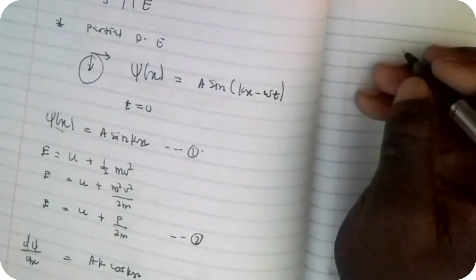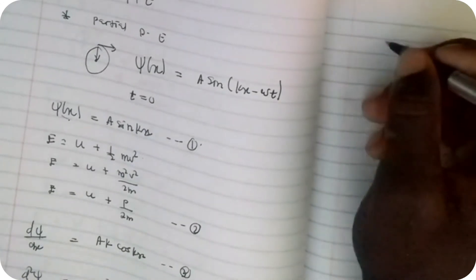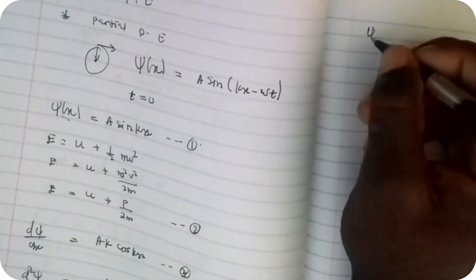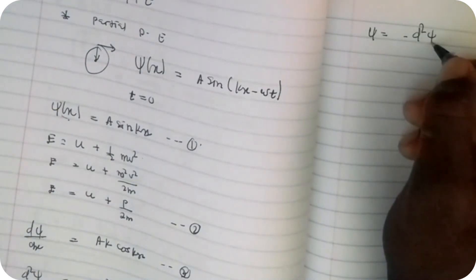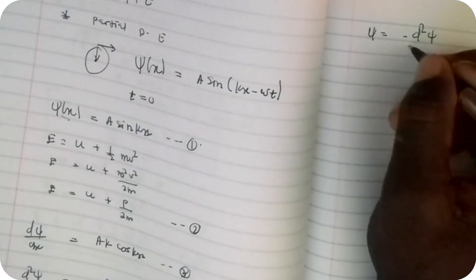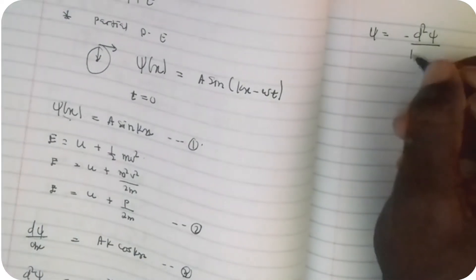From equation number 4, we now have a differential equation in terms of ψ. Let's make psi the subject of the formula. Our psi will be equal to -d²ψ/k²dx².